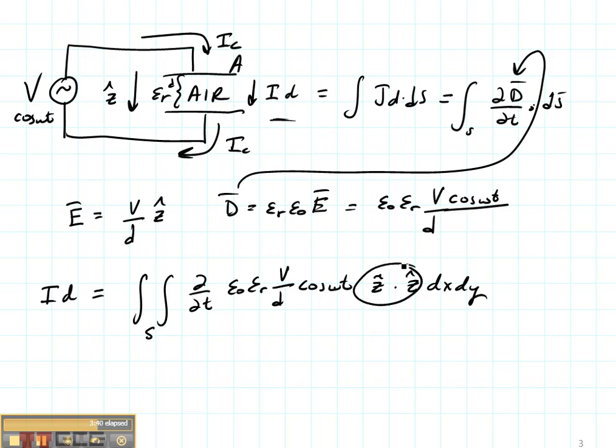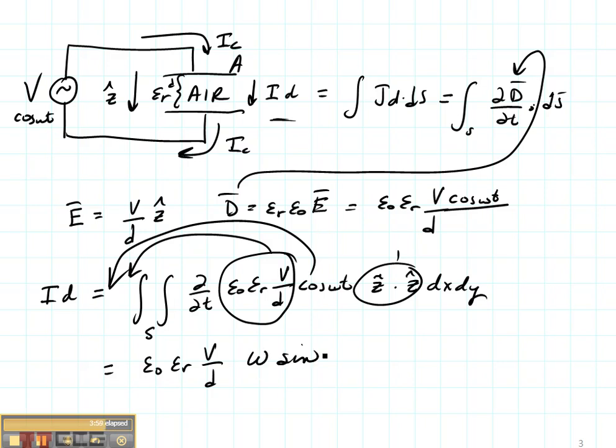Well, these two terms dot to 1 and all of this can come outside my integral. So I get epsilon naught times epsilon R times V over D. What about the time derivative of cosine of omega T? That can come outside also. When I take the time derivative, I get omega and then I get minus the sine of omega T.